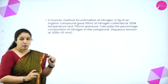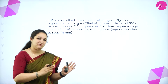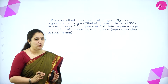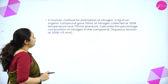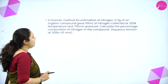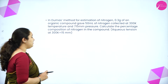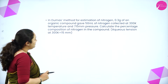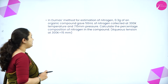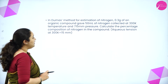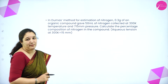Here we have a numerical. When you solve the numerical, things will be even more clear. In Dumas method for estimation of nitrogen, 0.3 grams of organic compound gave 50 ml of nitrogen collected at 300 Kelvin temperature and 715 mm pressure. Calculate the percentage of nitrogen in the compound when aqueous tension at 300 Kelvin is 15 mm.